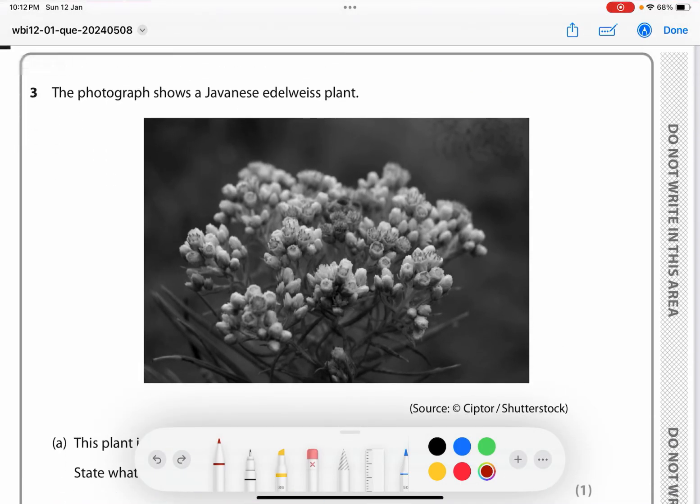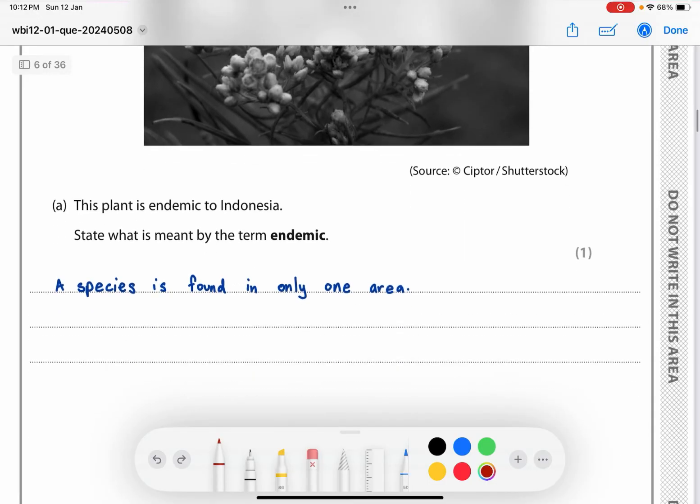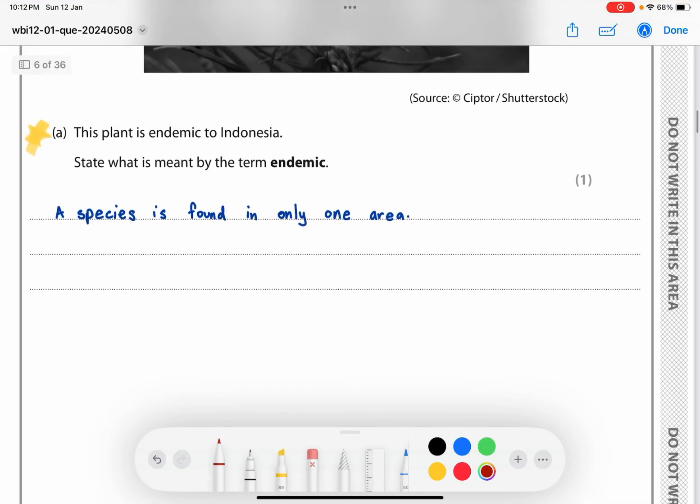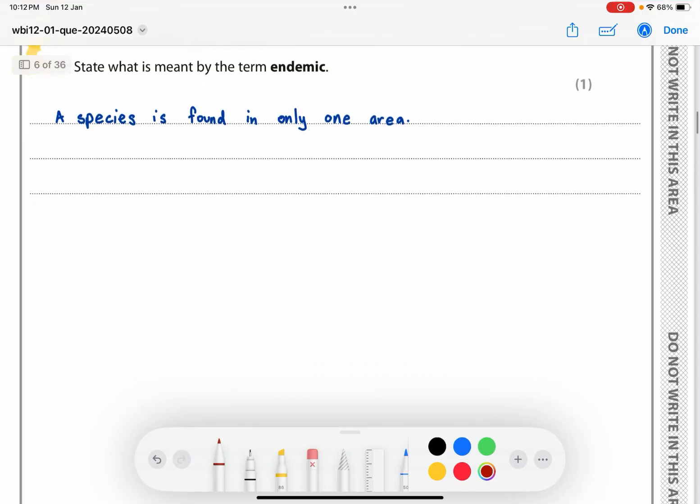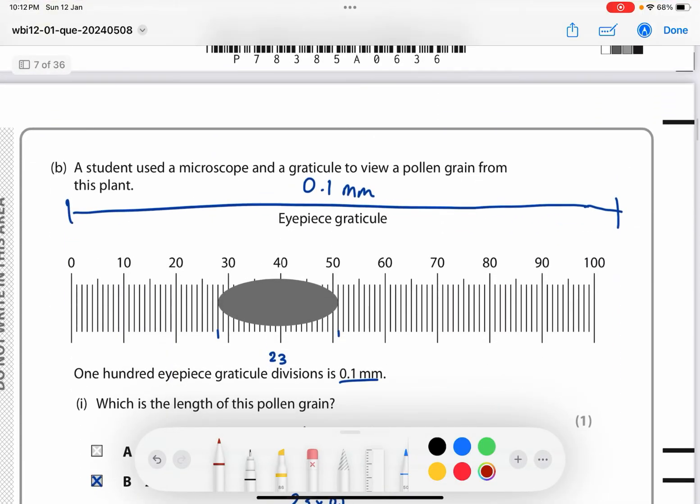Question three. The photograph shows a Japanese edelweiss plant. This plant is endemic to Indonesia. State what is meant by the term endemic. I want you to remember this - it's a definition which pops up almost every other year. Endemic means a species which is found in only one area.